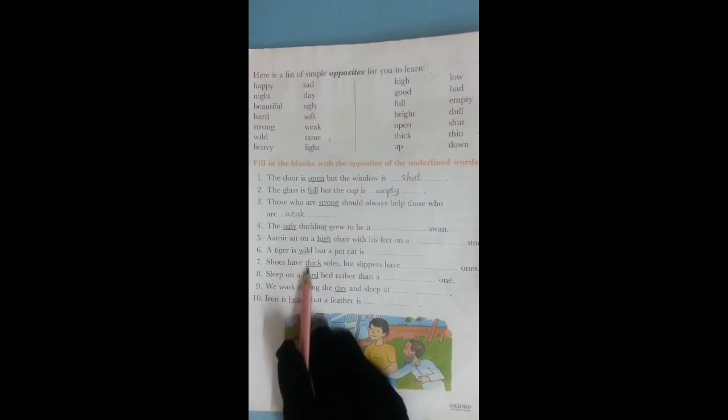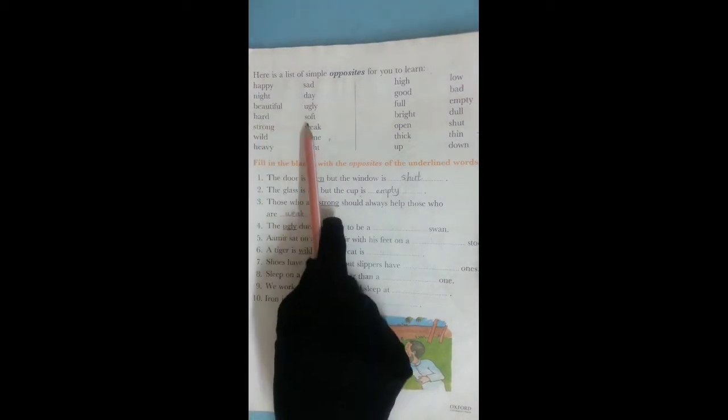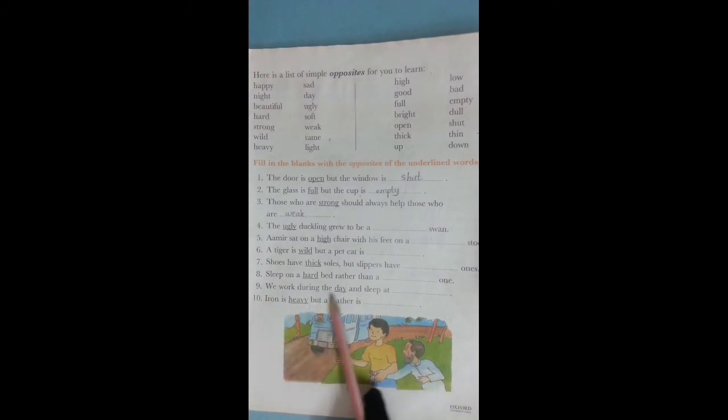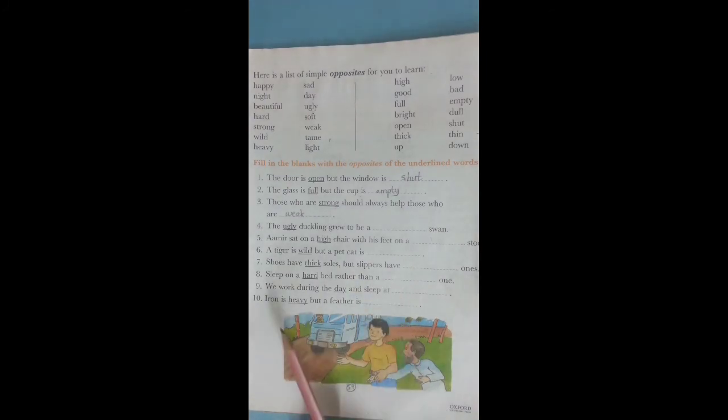Next sentence. Shoes have thick soles but slippers have thin ones. Thick. Yes. In this line. Yes, thick. The answer is thin. So we write here thin. Number 8: Sleep on a hard bed rather than a soft one. Opposite of hard is soft. Write here soft. We work during the day and sleep at night. We don't have to find from the list. First we have to learn this list, then we have to write the answer ourselves. If you see: Iron is heavy but a feather is light. If you know the answer like this.